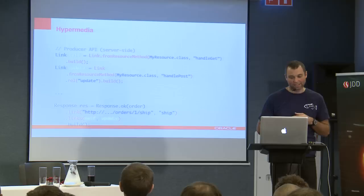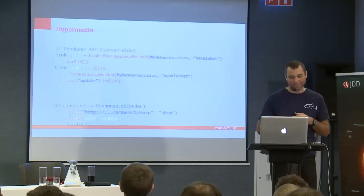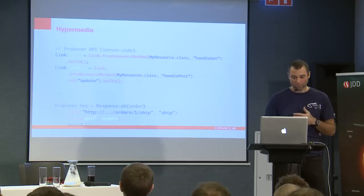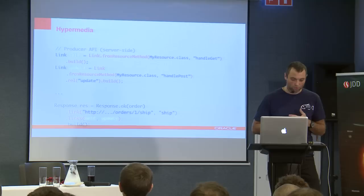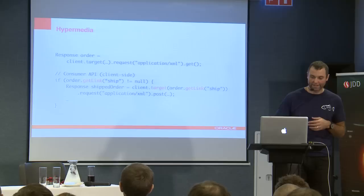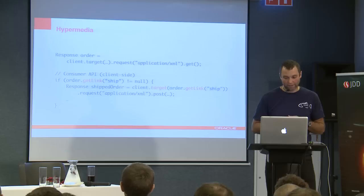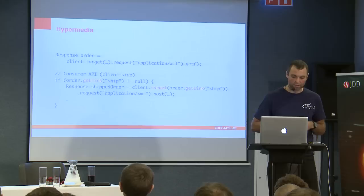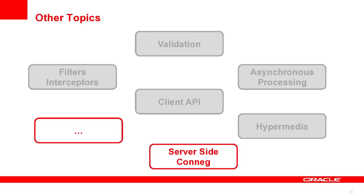On the server side, you don't need to know the exact URI - you can still build a link from your resources so they can refer to each other, and you can incorporate these links into the responses. On the client side, this is an example of how to consume the link and process further - you got a response containing a link called 'ship', and you can directly build another request for that link.